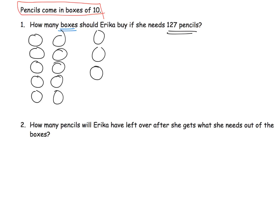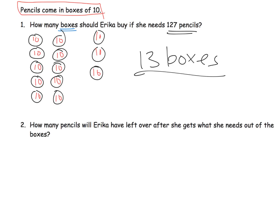Going back, each group represents 10 pencils. The question is how many boxes did we buy? Counting them: 1, 2, 3, 4, 5, 6, 7, 8, 9, 10, 11, 12, 13. She needs to buy 13 boxes. That's one way to do it; there are other ways.